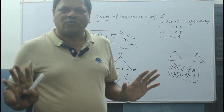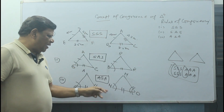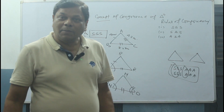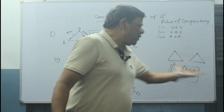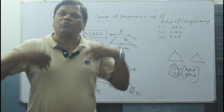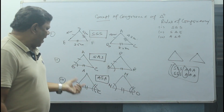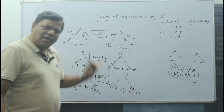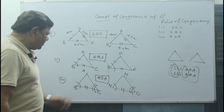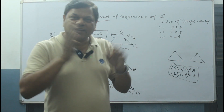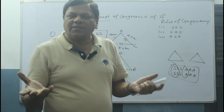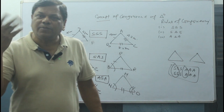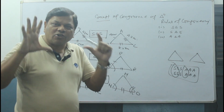Now, if I ask you — is AB equal to MN? You will say yes, because out of six pairs, three pairs are already equal, so the remaining parts must be equal. That means AB equals MN, AC also equals MO, and angle A also equals angle M. So out of six pairs — three pairs of angles and three pairs of sides — if any three are equal, the remaining three should be equal. I think you have got a little idea about the congruency of triangles.